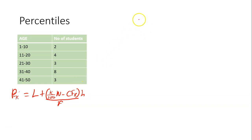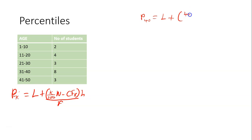Because this is percentiles, we use 100. So when asked to find the 40th percentile, the formula is L plus into brackets 40 over 100 N minus CFB times H divided by F.